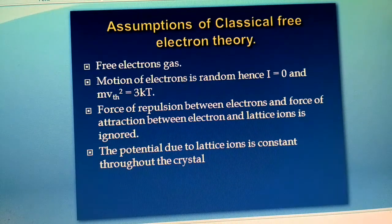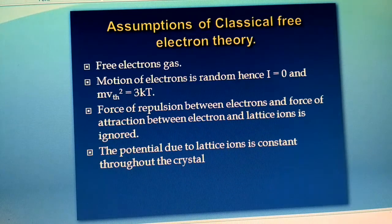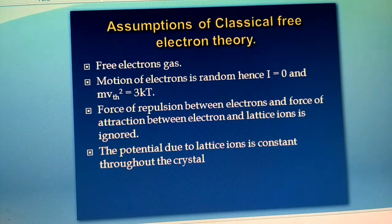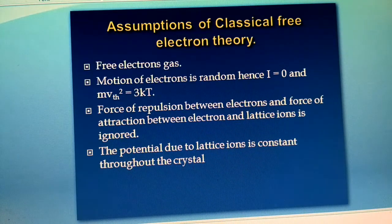The next assumption is that the force of repulsion between electrons and the force of attraction between electrons and lattice ions are both ignored. The electrons carry like charges and always repel each other, but this force of repulsion is neglected. Similarly, the force of attraction between electrons and lattice ions is also ignored in the classical free electron theory.